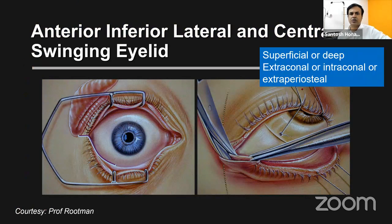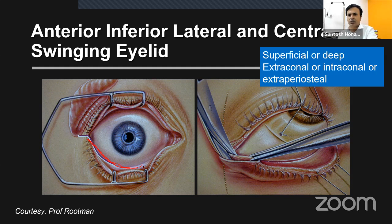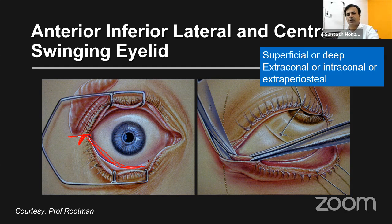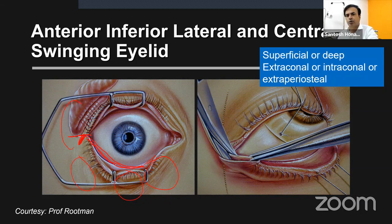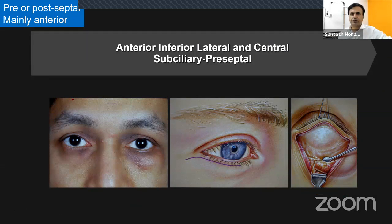For anterior inferior lateral and central, the most common incision is the swinging eyelid incision — starting with a lateral canthotomy of 8–10 mm with or without inferior cantholysis, followed by an inferior fornicial incision. This is the most common transconjunctival approach for orbital tumors and can access inferior medial, infralateral, and lateral/supralateral tumors.